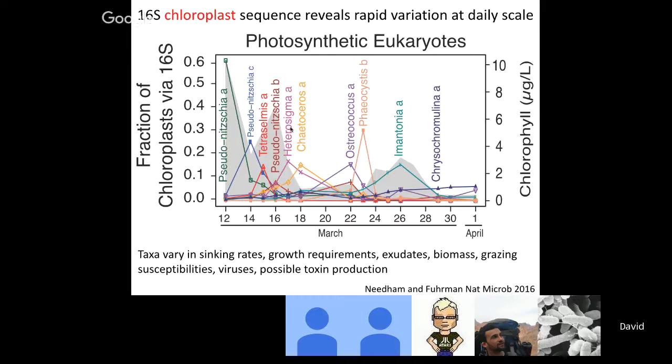It's important to note that these taxa probably vary in their sinking rates, growth requirements, the carbohydrates they may be exuding, their grazing susceptibilities, their different sizes, their different viruses, and also their toxin productions. This made us think about how phytoplankton blooms are studied, whether this variation is spatial or temporal, and made us realize that these blooms are not homogeneous — there's actually quite a bit of variability within a phytoplankton bloom.